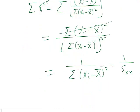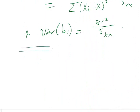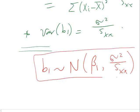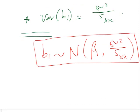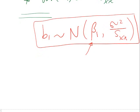To summarize, in this video we proved that b₁ is normally distributed with mean β₁ and variance σ²/Sₓₓ. This result is very important for hypothesis testing concerning β₁ and for constructing confidence intervals for β₁, which will be needed in the next lecture. That's all for this video — see you next time.